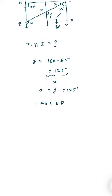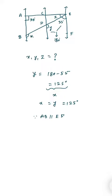And from here, we can find the value of angle g from the equation 90 plus g plus 55 equal to 180. And the value of g will be equal to 35 degrees.